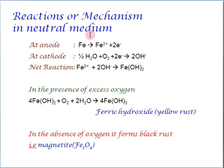At anode, the metal undergoes oxidation, releasing electrons. At cathode, it gets reduced to release hydroxide ions. And finally, these metal ions and the hydroxide ions combine to form ferrous hydroxide. And in the presence of excess oxygen, this ferrous hydroxide further oxidizes to form ferric hydroxide, and this is what we call yellow rust.